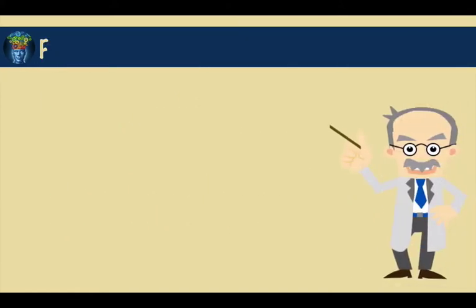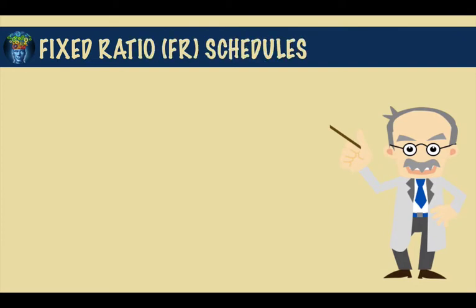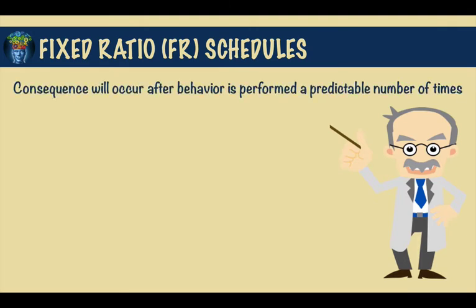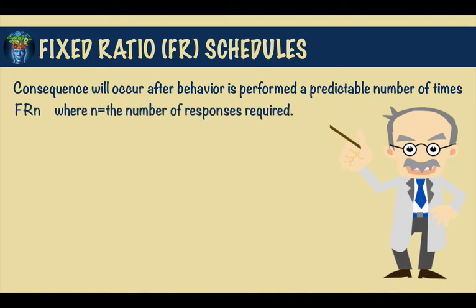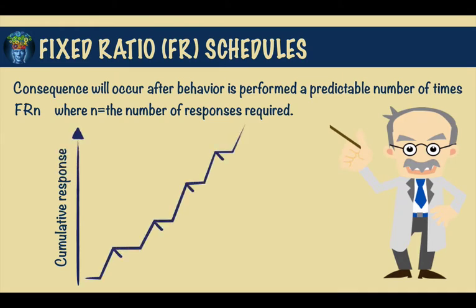First we have a fixed ratio reinforcement schedule. Here you know that the consequence will occur after you have performed the behavior a predictable number of times. These schedules are designated by FRN, where N is the number of responses required. So for example, if the experimenter is working with a rat in a Skinner box, he may set the equipment to require 10 responses for each reinforcement — this is then an FR10. On a cumulative recorder, it may look something like this.